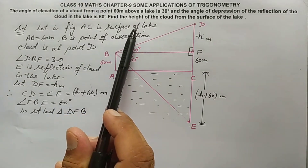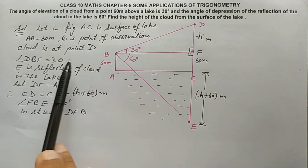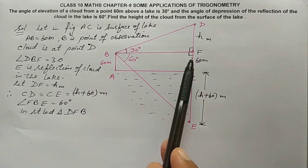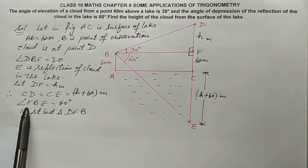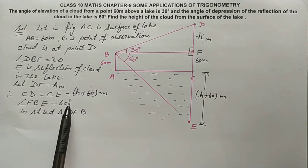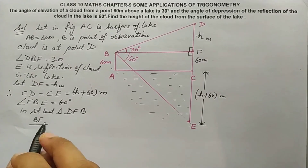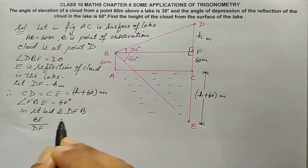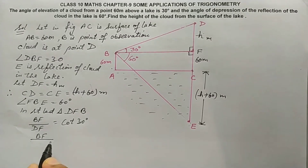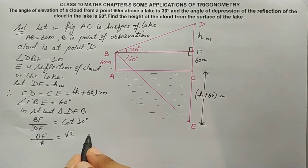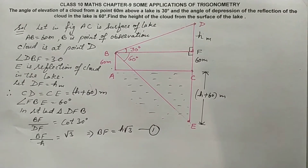In the figure, AC is the surface of the lake, AB is 60 meters, angle DBF is 30 degrees, E is the reflection of the cloud, DF equals h. In right-angled triangle BFD, BF over DF equals cot 30 degrees. So BF over h equals root 3, giving BF equals h root 3. This is equation 1.